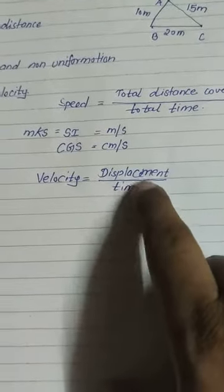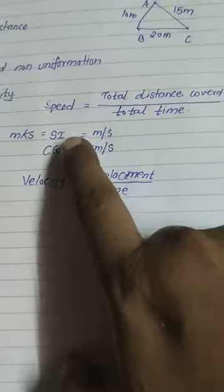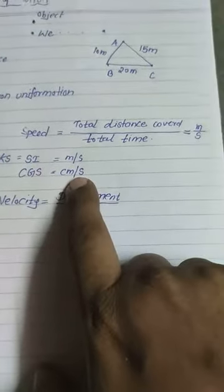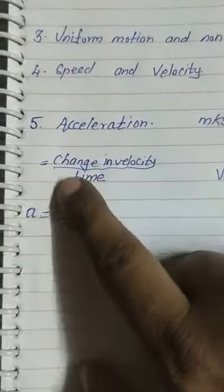The SI unit for velocity is meter per second, and the CGS unit is centimeter per second.